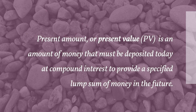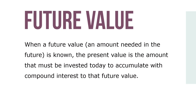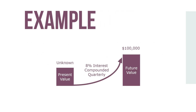Present value (PV) is an amount of money that must be deposited today at compound interest to provide a specified lump sum of money in the future. When a future value is known, the present value is the amount that must be invested today to accumulate with compound interest to that future value. For example, if a corporation wants $100,000 in 5 years to replace its fleet of trucks, what amount must be invested today at 8% compounded quarterly to achieve this goal?